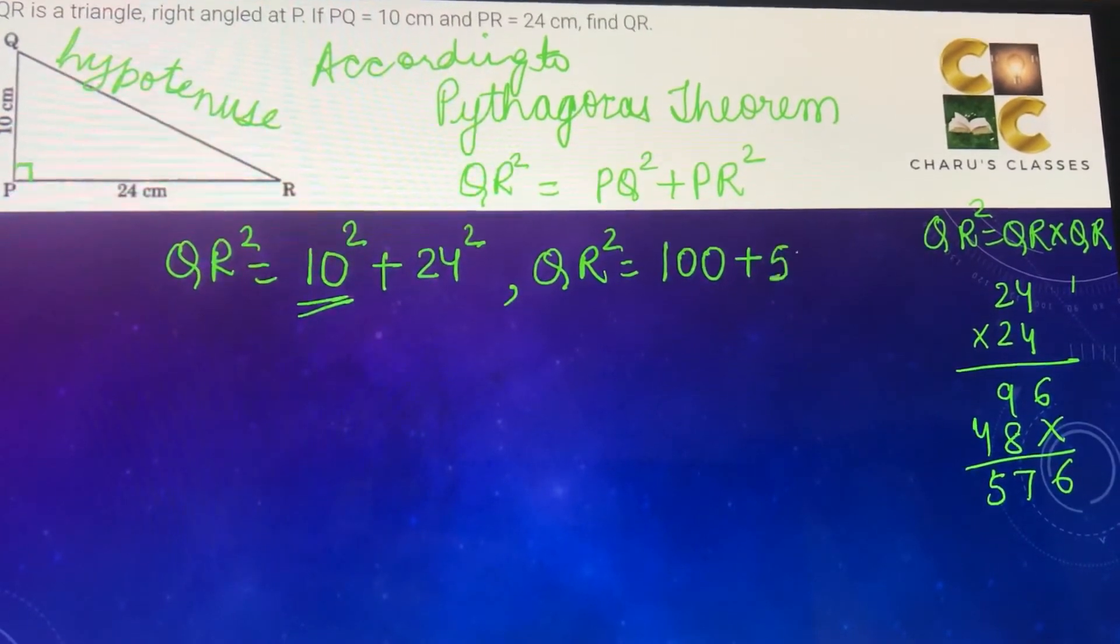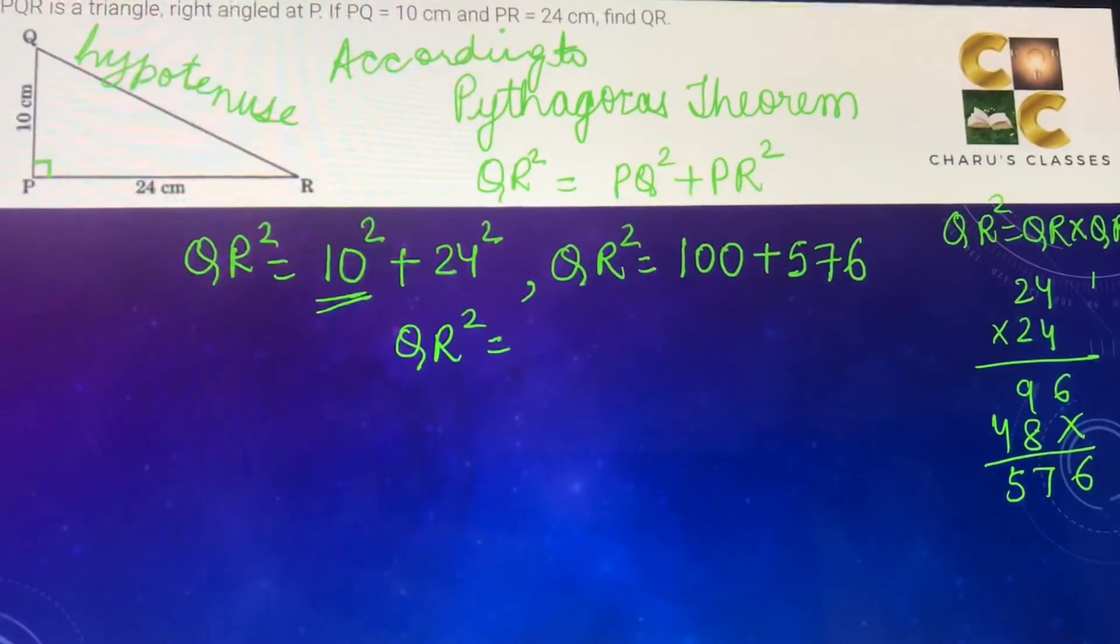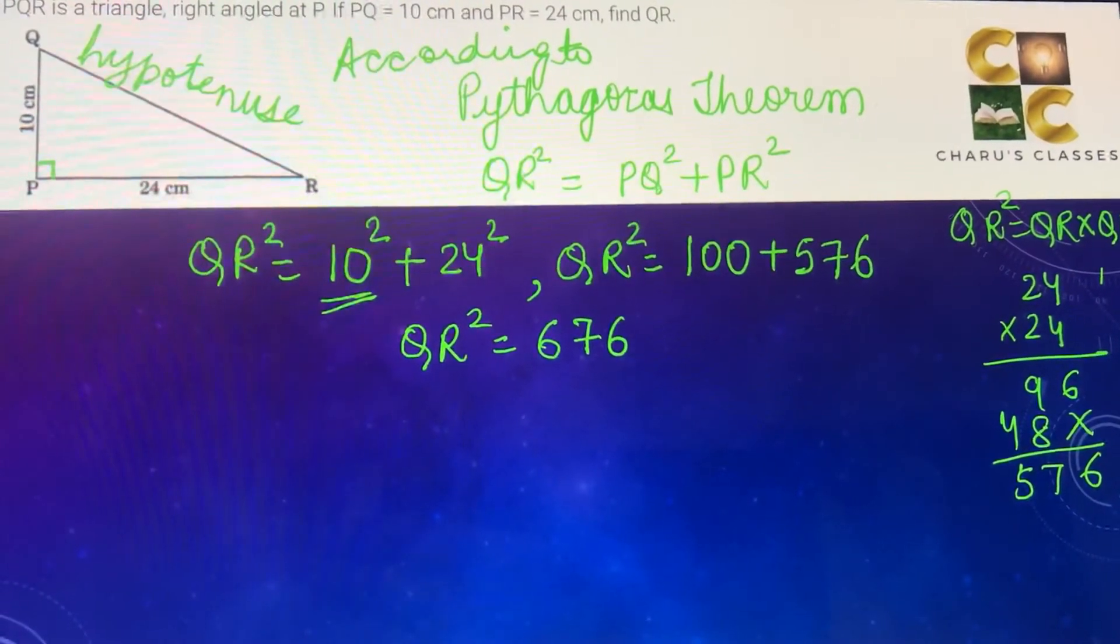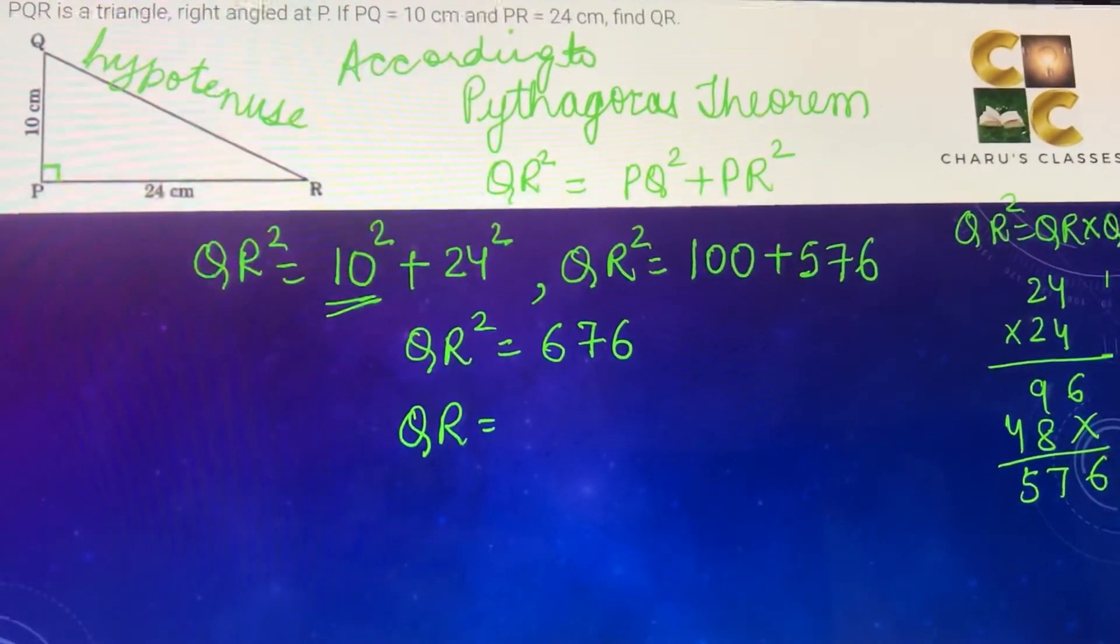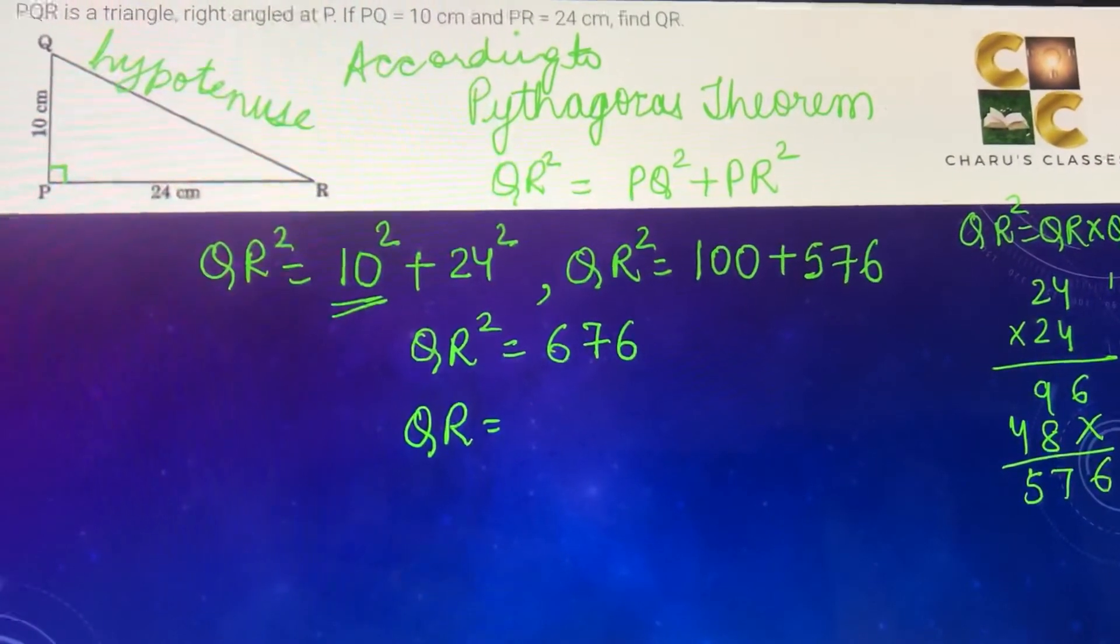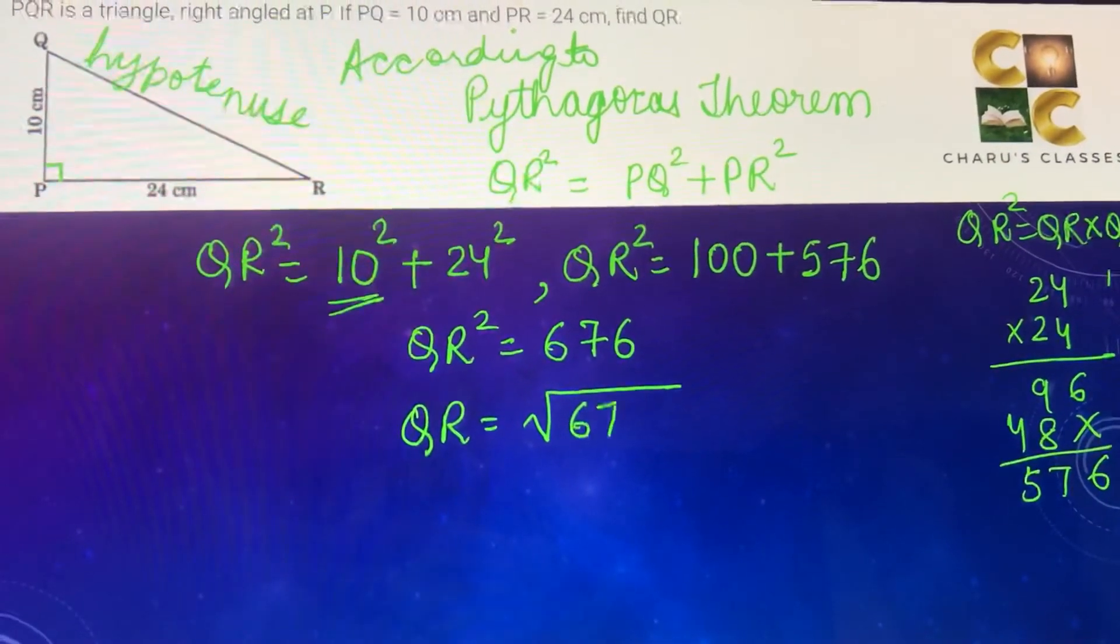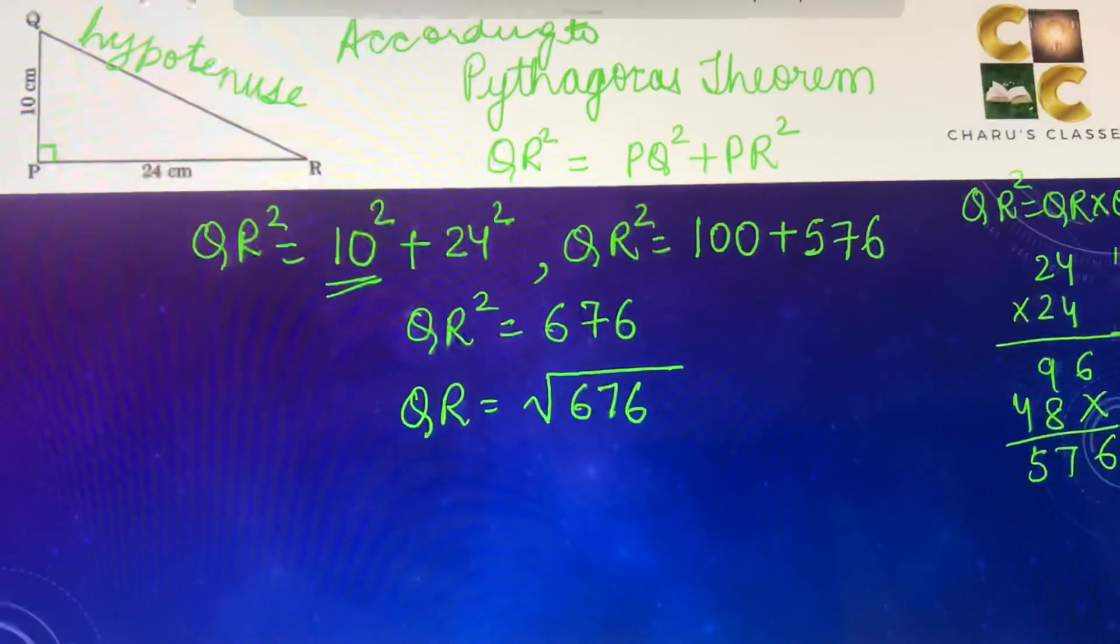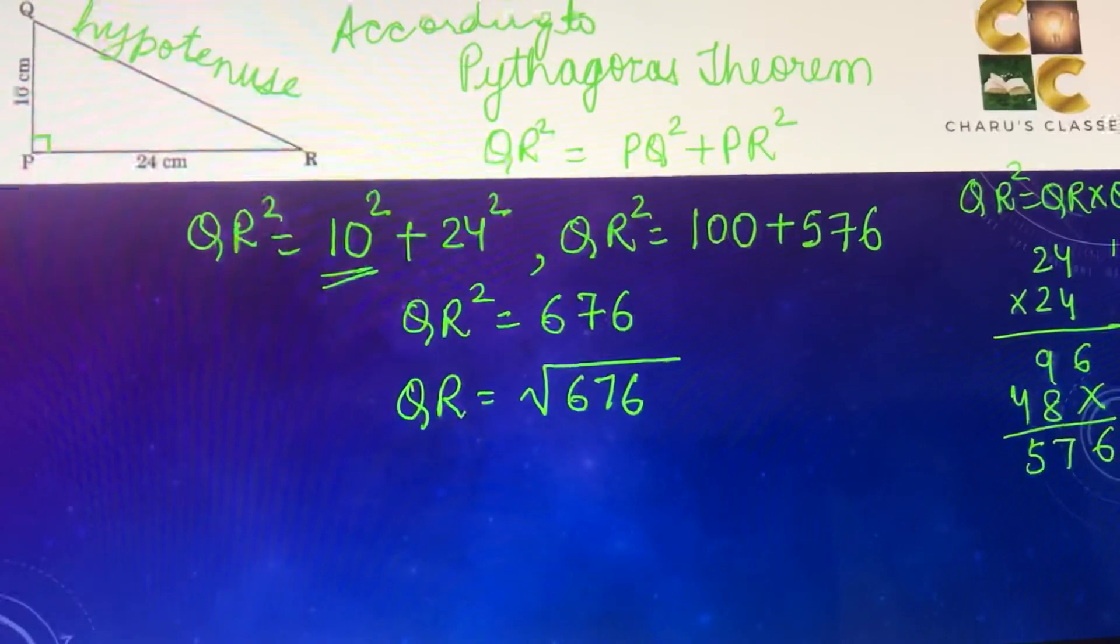Which is 576. So we are getting QR square as 100 plus 576, that is 676. So we can say QR is equal to square root of 676.